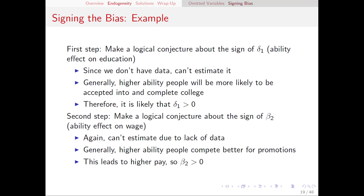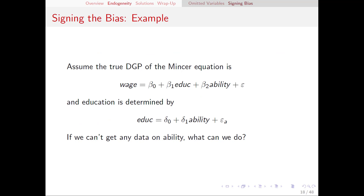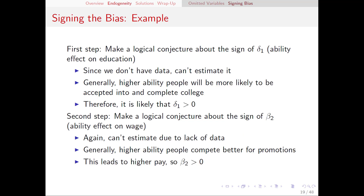The second step is to think about what is the sign of beta2. Had we been able to put ability into the original regression equation, what would the sign be — what is ability's effect on wage? Again, since we don't have ability, we can't actually estimate this, but we can think through it logically. Generally, people who are high ability are better at their jobs, they are more competitive for promotion, so this generally, on average, leads to higher pay. So beta2 is also positive.